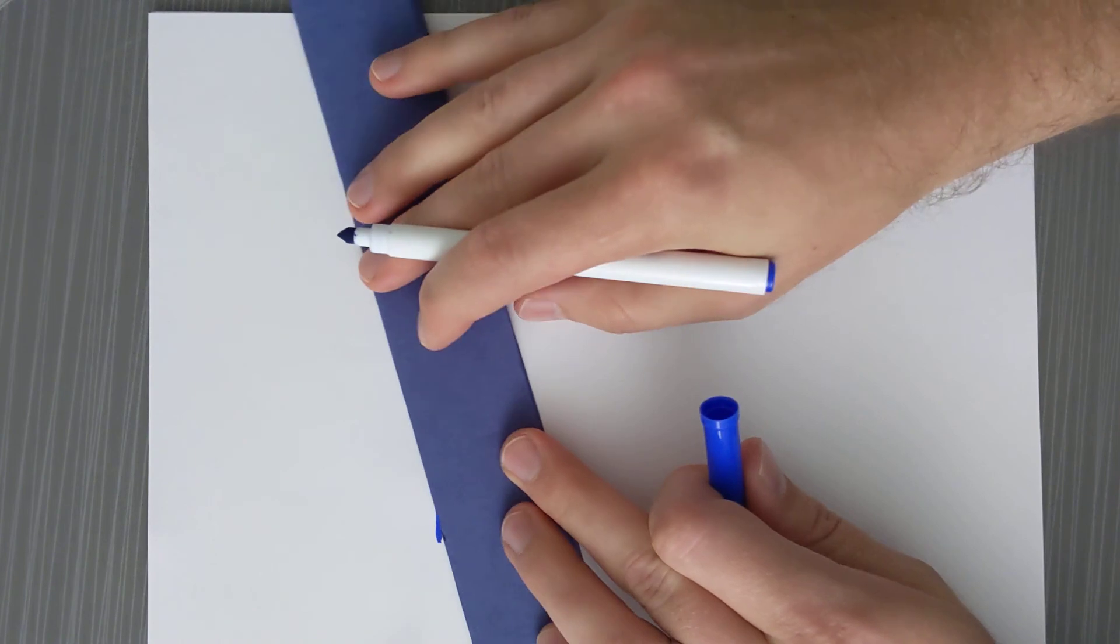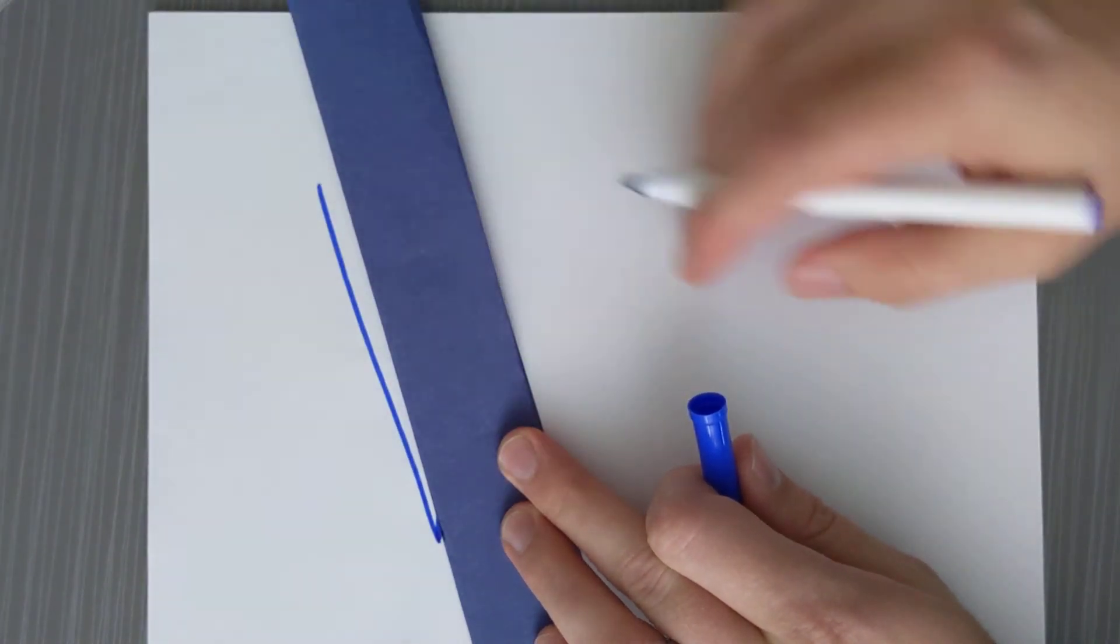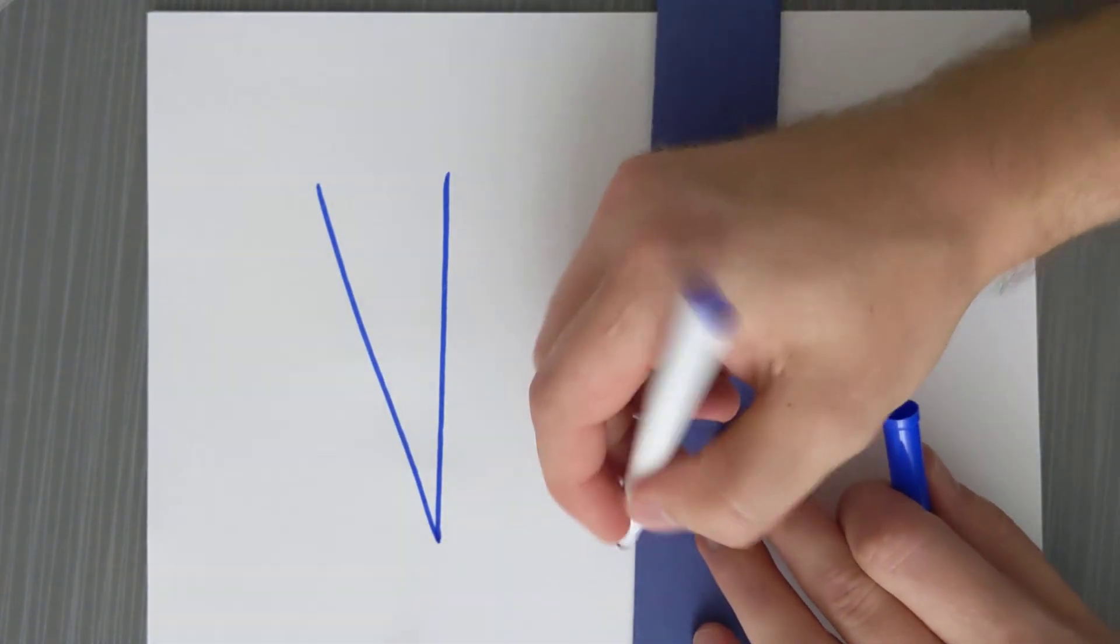Now, we also want to be able to copy angles. So let's make a random angle. All right, that's a good random angle. I'm going to copy it down here.